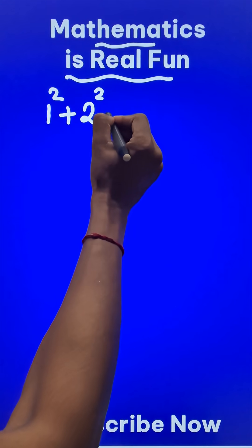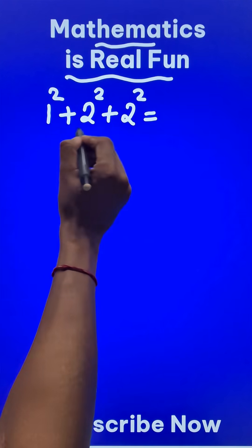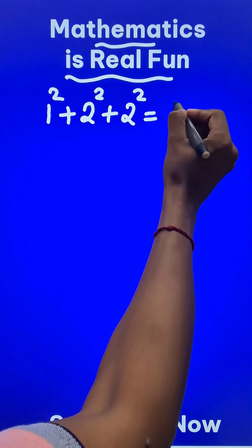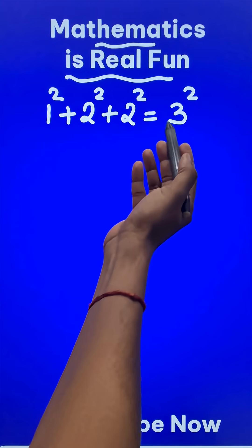1 square plus 2 square plus 2 square. The sum is 9, right? And 9 happens to be 3 square. Now what is so special about this?